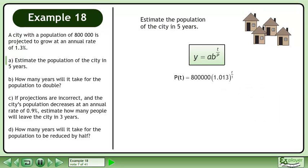The function is p of t equals 800,000 times 1.013 raised to the power of t over 1, where p represents the population and t is the time in years.